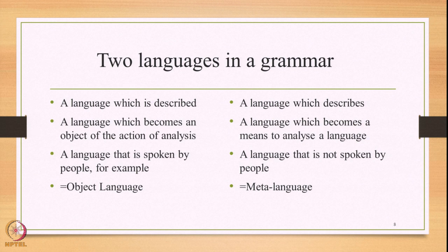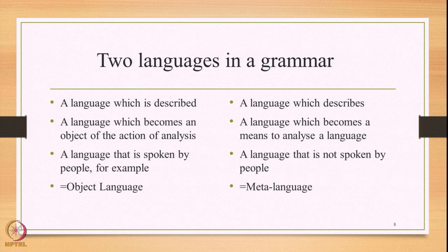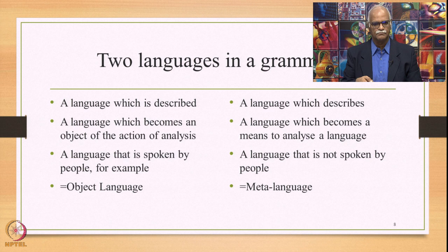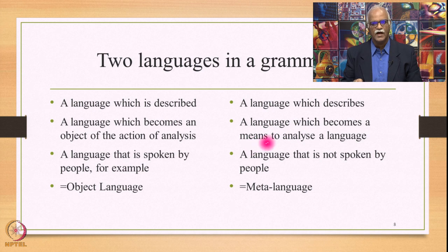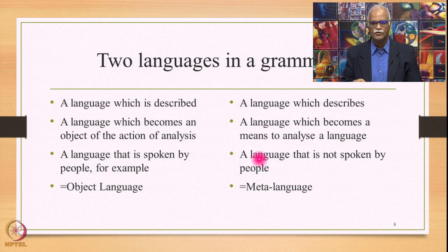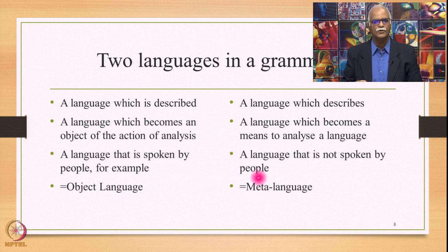So if we view the features of both these languages at one go: an object language is a language which is described, and a meta-language is a language which describes. Object language becomes an object of the action of analysis, whereas meta-language becomes a means to analyze. Object language is a language that is spoken by people, but meta-language is a language that is not spoken by people. These differences need to be noted very carefully.